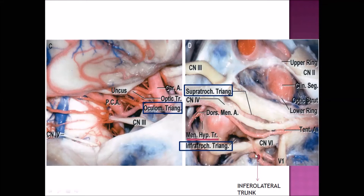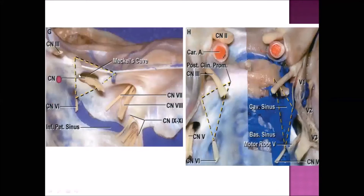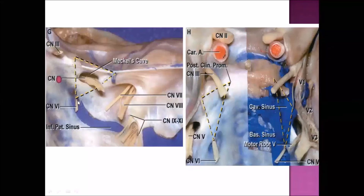The infralateral trunk lies in front of the sixth nerve triangle. Now for the clival triangles — there are two: the posterolateral and the posteromedial clival triangles. In the posterolateral triangle, you can see the fourth nerve entry, the cochlear nerve entry, and the sixth nerve — the abducent nerve — entering through Dorello's canal.